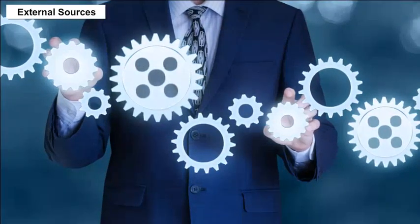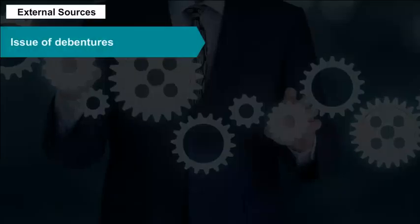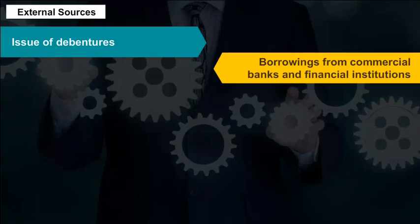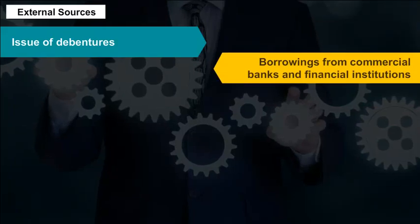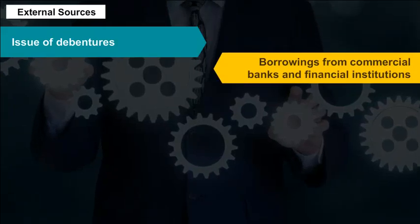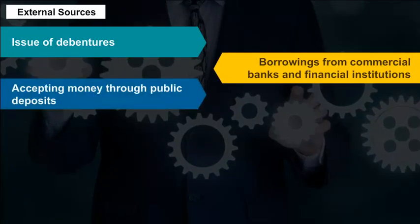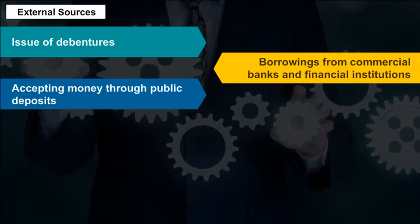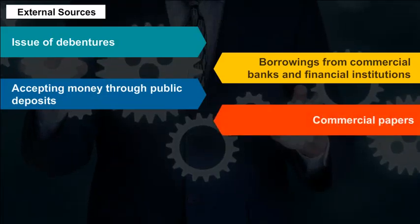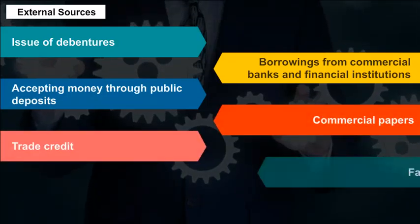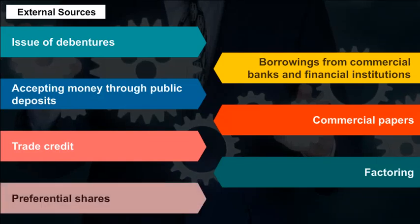External sources are funds available outside the company, sourced from suppliers, lenders, and investors. Companies rely on external sources when large sums are needed. These funds are often costly, involving payment of interest and mortgaging assets. External funds can be acquired for both short-term and long-term needs. Common external sources include debentures, commercial banks, financial institutions, public deposits, commercial papers, trade credit, factoring, and preferential shares.